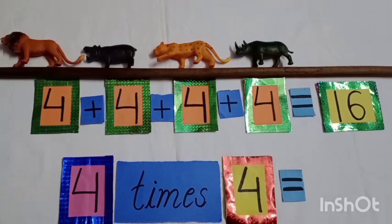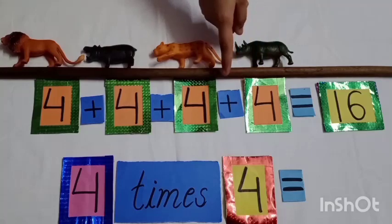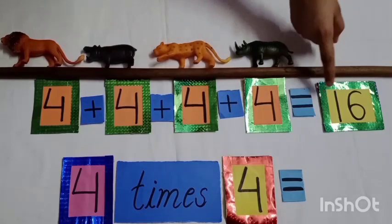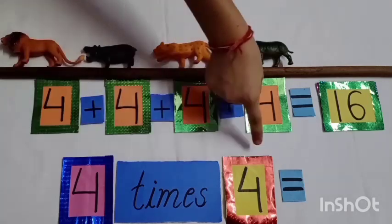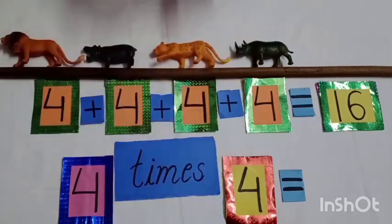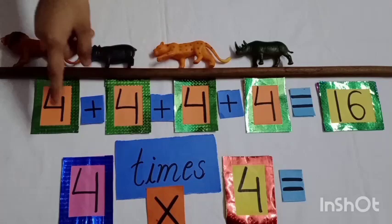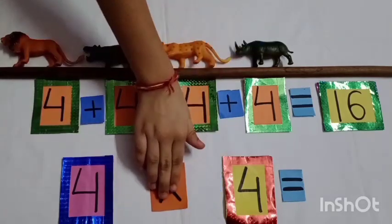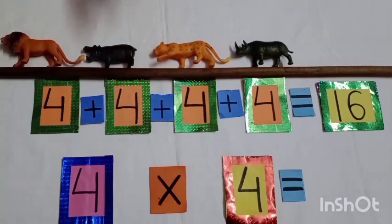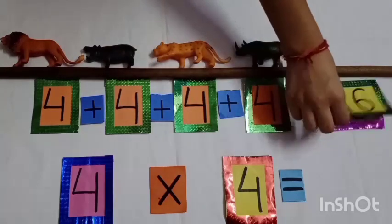Students, to count the legs of all the animals, we added four times four, so we got sixteen legs in all. Four times four means four multiplied by four. Here we can use the sign of multiplication in place of times. So four multiplied by four is equal to sixteen.